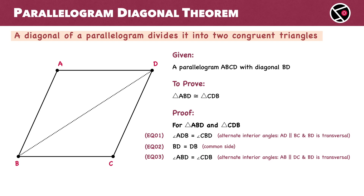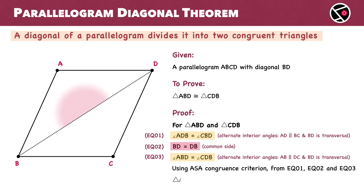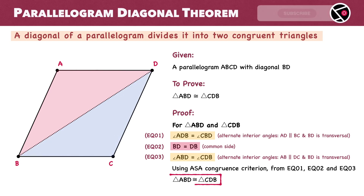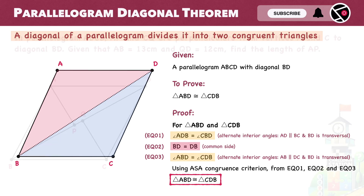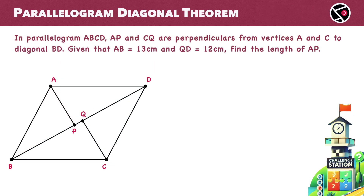We have two pairs of equal corresponding angles and the included sides are also equal. So, by the ASA congruence criterion, triangle ABD is congruent to triangle CDB. Now that we are done with the proof, it's time to put your knowledge to the test at the challenge station.